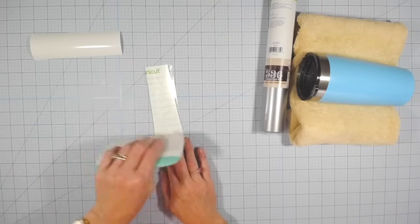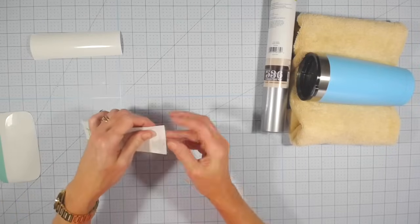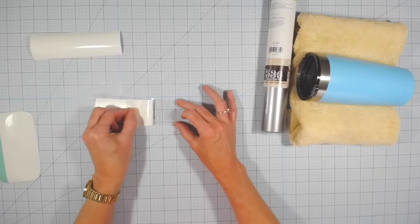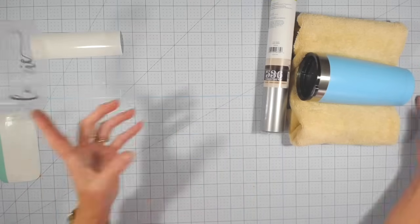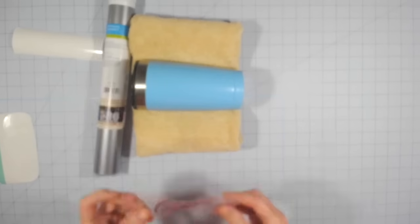Once you have it burnished on both the front and the back you're going to carefully remove that paper backing. I find it easiest to keep the paper backing low and remove it in kind of an angled direction.